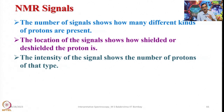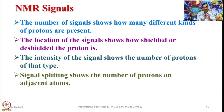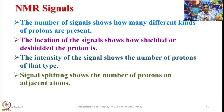The signal splitting shows the number of protons on adjacent atoms. After identifying the three groups, the relative positions of those groups in the molecule are vital to understanding the whole molecule. Signal splitting indicates where exactly they are located - whether groups are close to or farther from each other.